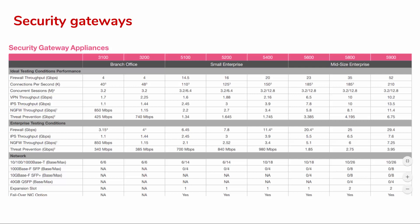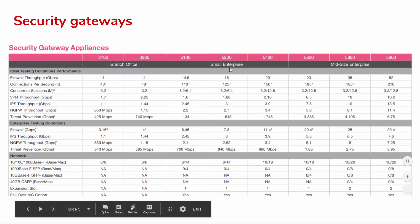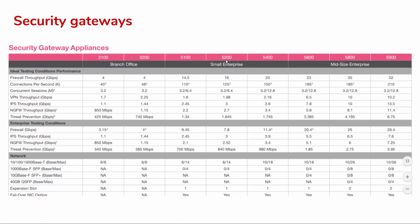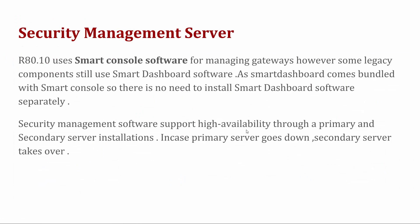Here you can see the different platforms available. For branch office and small enterprise or mid-size, there are the 3000 series and 5000 series — including models 5100, 5200 — and similarly more products are available for mid-size enterprises, data centers, and other uses.